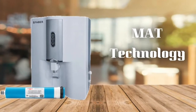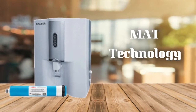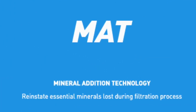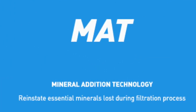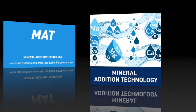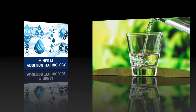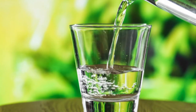Fourth is MATT. MATT in water purifier refers to the mineral addition technology filter. It is used to add back the appropriate minerals like calcium, magnesium, and copper that are lost during the RO purification process. As a result, it improves the water quality.